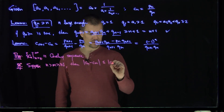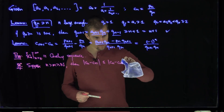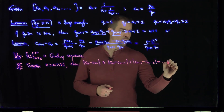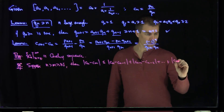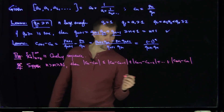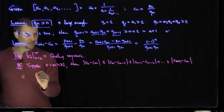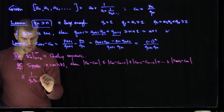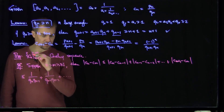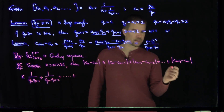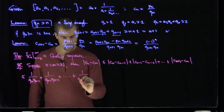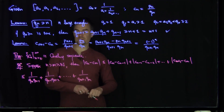By the triangle inequality, |cn - cm| is less than or equal to |cn - cn-1| plus |cn-1 - cn-2| plus ... all the way down to |cm+1 - cm|. Using the lemma for each term, dropping the (-1)^n factors, this is less than or equal to 1/(qn·qn-1) plus 1/(qn-1·qn-2) plus ... down to 1/(qm+1·qm).